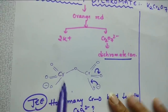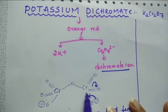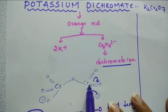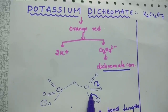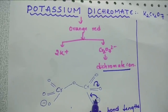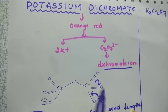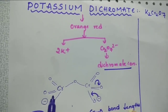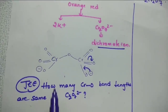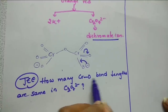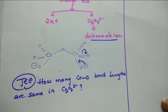This is the structure of dichromate ion. See here Cr double bond O, double bond O, O⁻ and Cr-O-Cr double bond O, double bond O, O⁻. These electrons involve in delocalization, because of this resonance all the Cr-O bond lengths are same in dichromate ion. One of the previous year questions is: how many Cr-O bond lengths are same in Cr₂O₇²⁻?